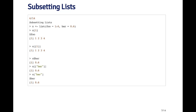I can extract the first element using the single square bracket. Remember, the single square bracket always returns an element that's the same class as the original. So if x is a list, then x bracket one is going to be a list. What I get back is a list that has an element called foo, which is a sequence one through four.